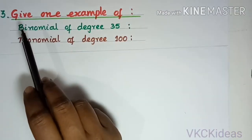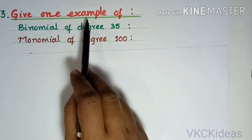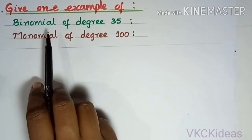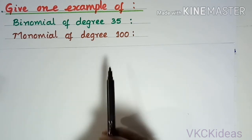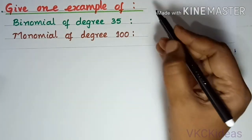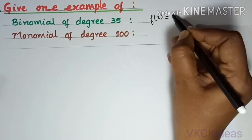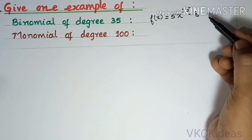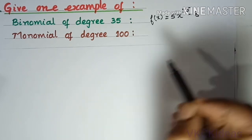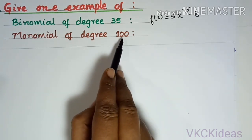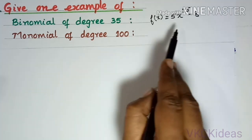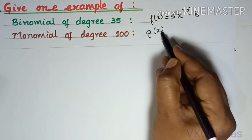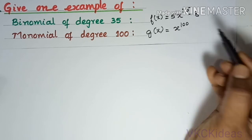Exercise 3: Give one example each of a binomial of degree 35 and a monomial of degree 100. For a binomial of degree 35: f(x) = 5x³⁵ − 8. You can write any polynomial like this. For a monomial of degree 100: g(x) = x¹⁰⁰.